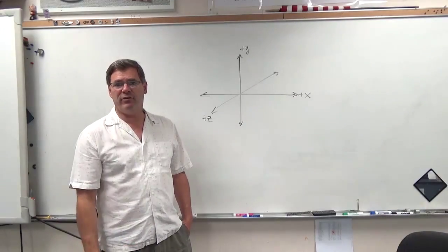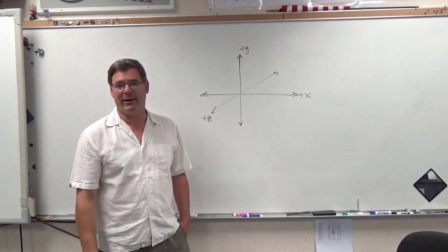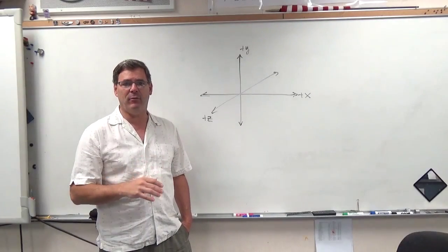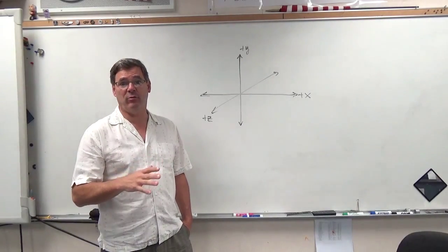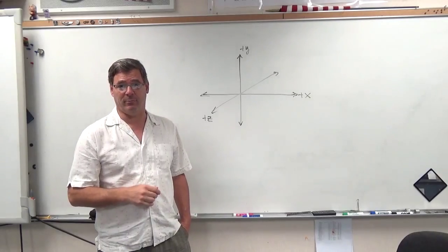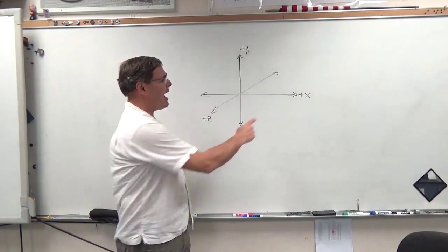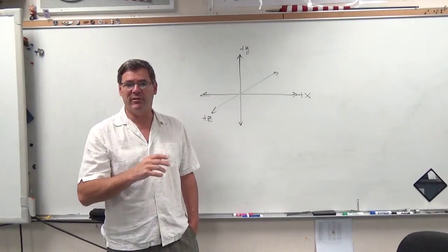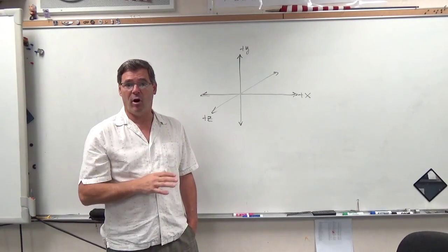To start off, we have to understand what a right-handed coordinate system is. Throughout the book and all the lessons, everything we do will always be using the right-hand coordinate system. So how does that work? How are the x, y, and z axes positioned relative to one another all the time?